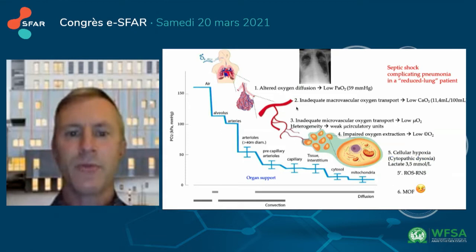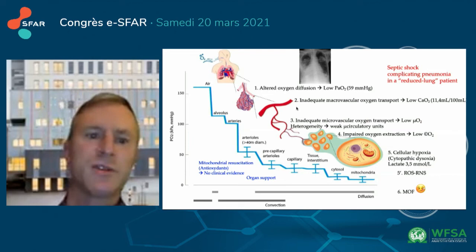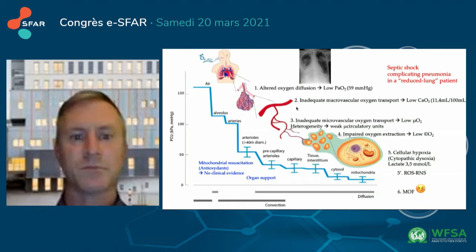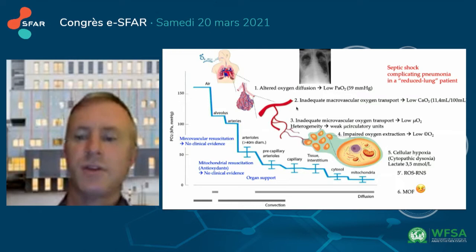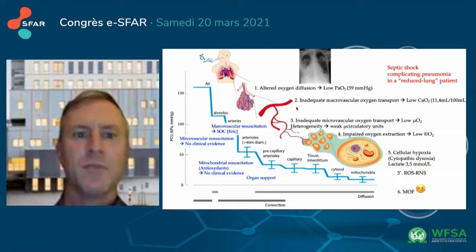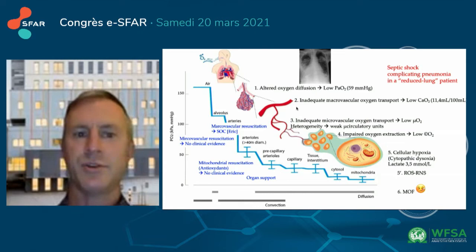To cope with this situation, of course, we are going to provide organ support, for instance, continuous renal replacement therapy. We're going to try to resuscitate the mitochondria, for instance with antioxidants, but for now there's no clinical evidence for efficacy. We could try to resuscitate the microcirculation, but the same — there's no clinical evidence of efficacy. Eric has shown us that microvascular resuscitation is the standard of care and has improved the clinical situation.